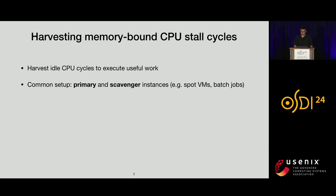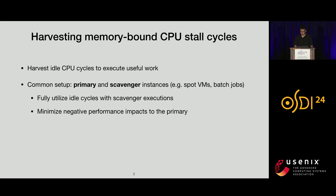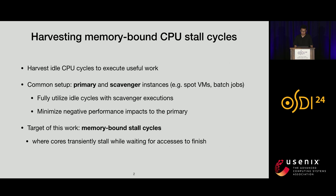CPU cores are valuable resources in data center infrastructure. As a result, there has been extensive effort trying to harvest idle CPU cycles and fully utilize the CPU cores. The common setup is to have a scavenger instance that temporarily runs on cores not actively being used by the primary instances. In this work, we focus on memory-bound stall cycles, which are cycles where the cores transiently stall while waiting for the memory access to finish.